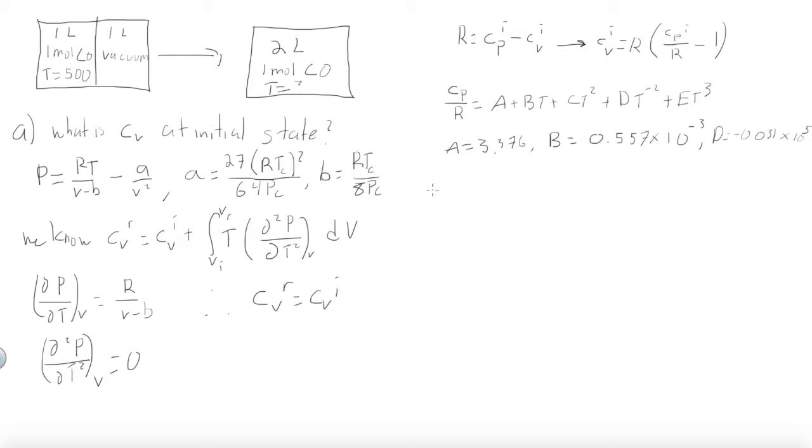By plugging these values in, we get the following equation. CP over R is equal to 3.376 plus 0.557 times 10 to the negative 3 times T minus 0.031 times 10 to the fifth times T to the minus 2.